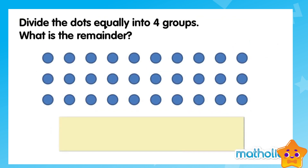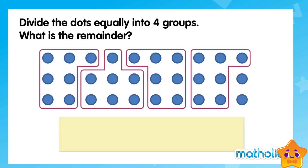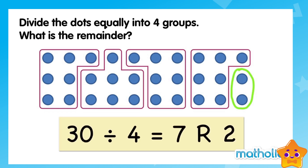Divide the dots equally into four groups. What is the remainder? There are 30 dots. We can place them equally into four groups, with seven dots in each group. There are two dots remaining. 30 divided by four equals seven, remainder two.